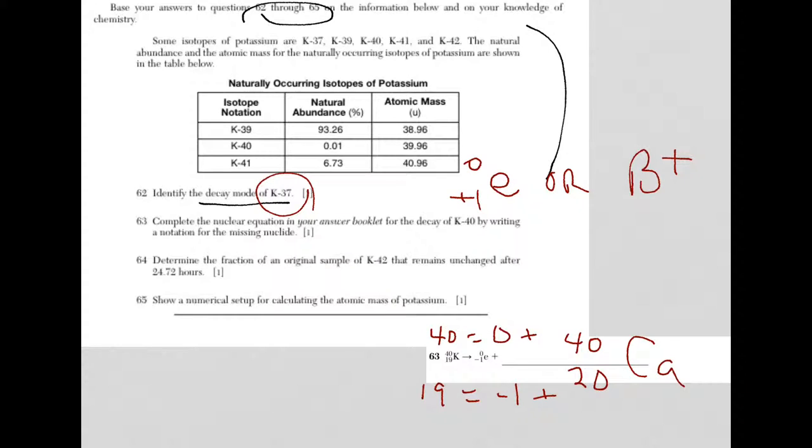Then you need to look up on the periodic table what's element 20, and that is calcium. So you could have wrote calcium just like you see it here. You could have wrote calcium-40 or Ca-40 would be an appropriate answer for 63.